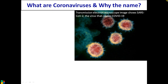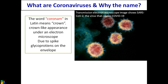Starting with what are coronaviruses and why the name. This is a transmission electron microscope image released by the Vaccine Research Center of NIH in the USA — the causative virus of COVID-19. Why the name coronavirus? As you can see, this is an enveloped virus. On top of the envelope there is a spike projecting outward, giving the appearance of a crown. In Latin, 'coronam' means crown, hence the name coronavirus — a typical characteristic of this virus family.